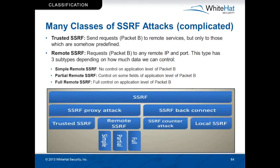On slide 64 we can see the new taxonomy that Alexander put together, and it's actually pretty good — comprehensive, but also extremely complicated. There are trusted SSRF attacks, which is when the remote server has a trusted relationship with other particular services and will blindly accept whatever you're sending. There are remote SSRF attacks, where the server will connect to anything you want. You have simple remote, where you have very little control over packet B — the second request, the actual attack payload. You have partial remote, where you can control some fields in it, similar to what we saw in version 6 where you can modify the HTTP path sent on to the secondary server. The taxonomy covers simple, partial, and full remote SSRF attacks.